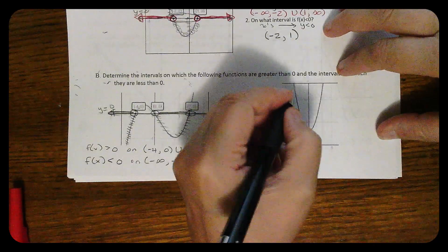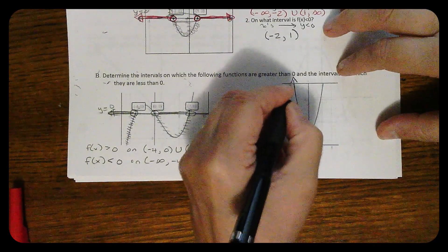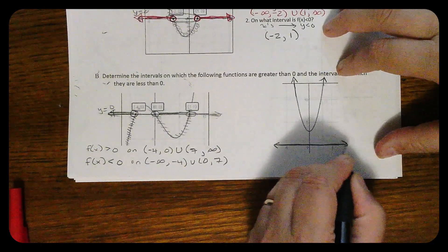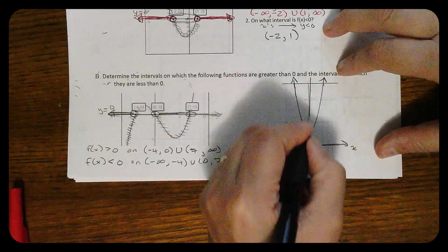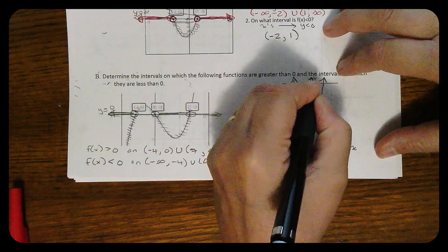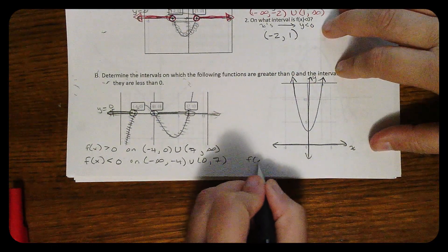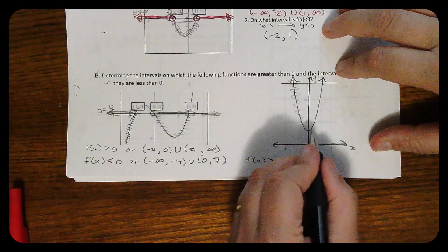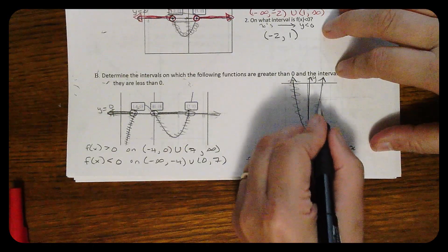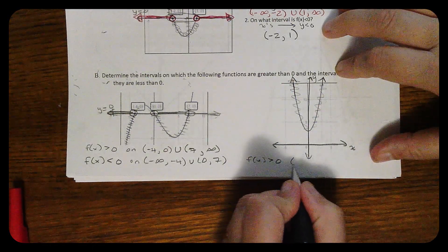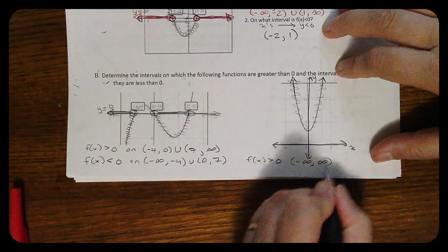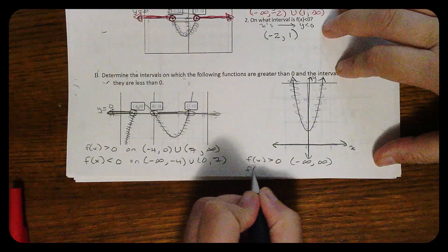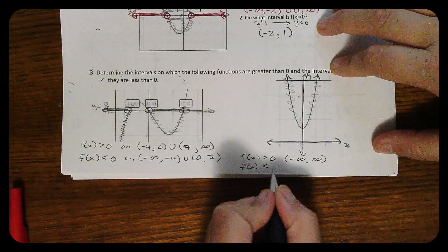This one is a bit unusual. The origin is right in here, and f(x) is greater than 0 when the function is above the x-axis — that's everything. So all x's from negative infinity to infinity make the y's greater than 0. Therefore f(x) is less than 0 never.